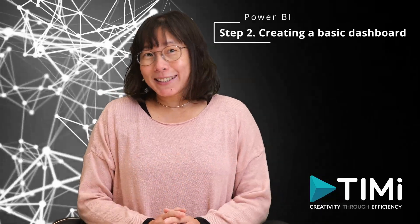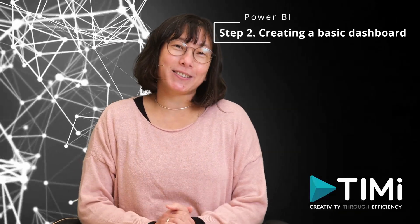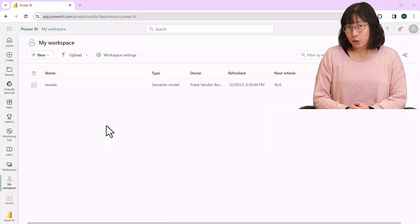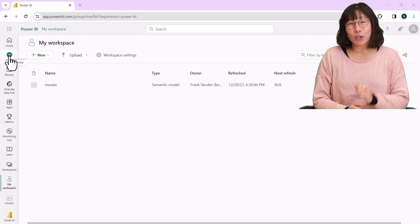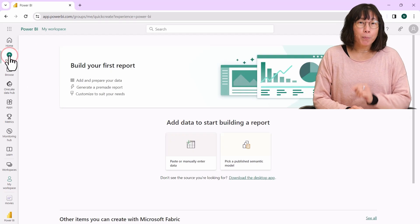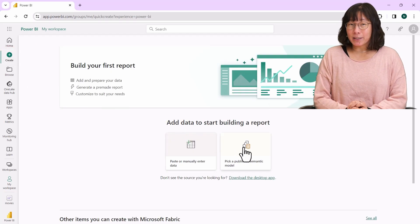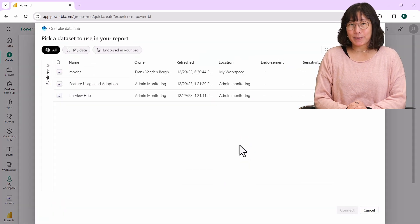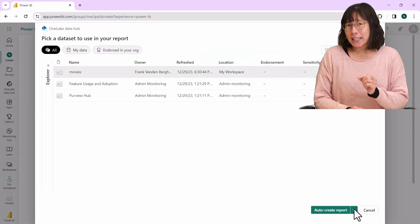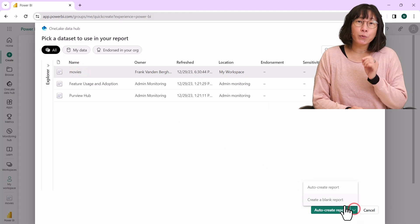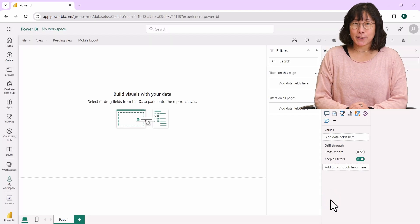Now that our dataset is in Power BI cloud, let's create a simple dashboard for demonstration. Navigate to the movie dataset. Click on create. Choose 'pick a published semantic model' and select the movies dataset. Opt for 'create a blank report' and you'll find yourself in the Power BI design user interface.